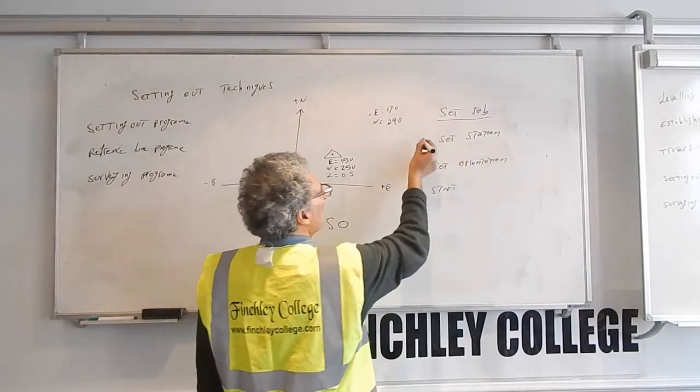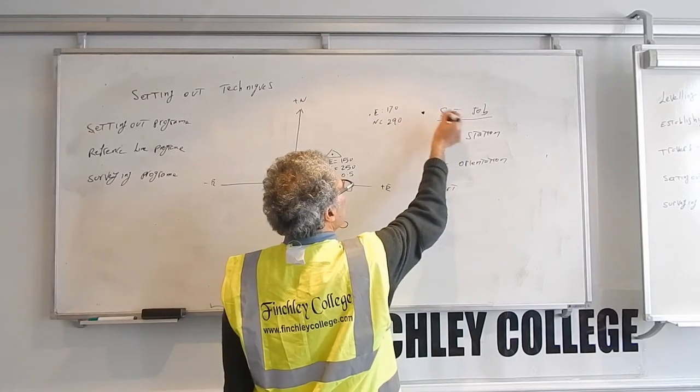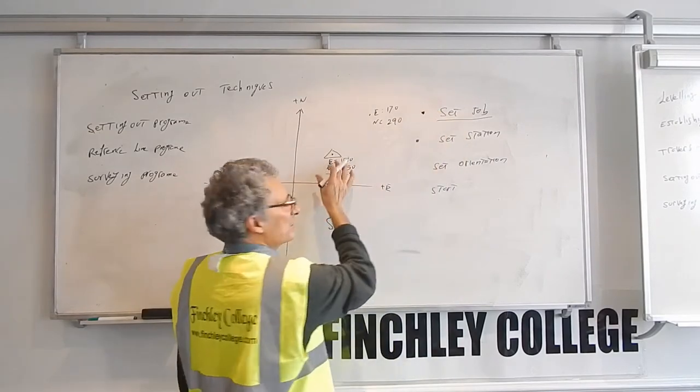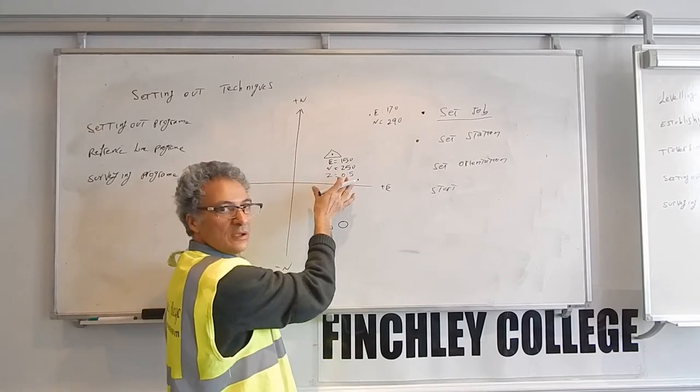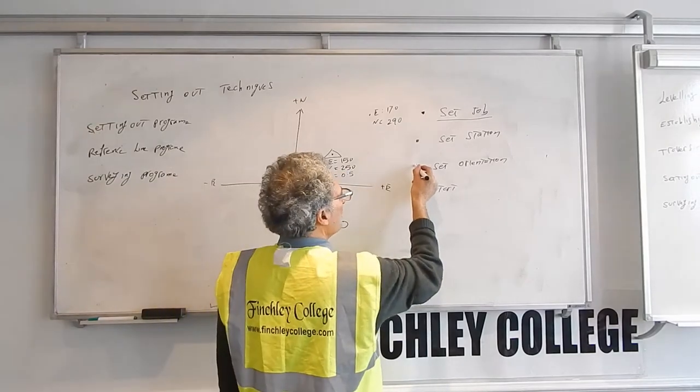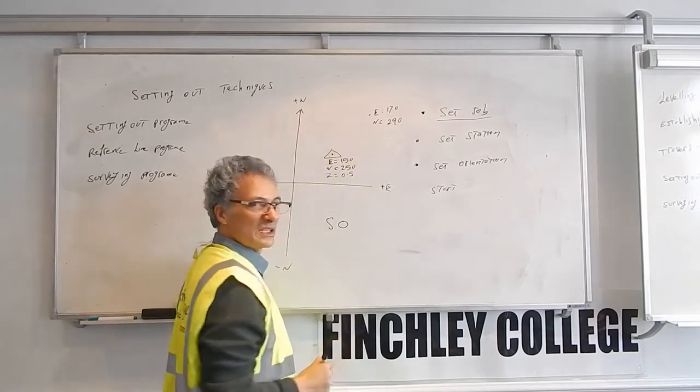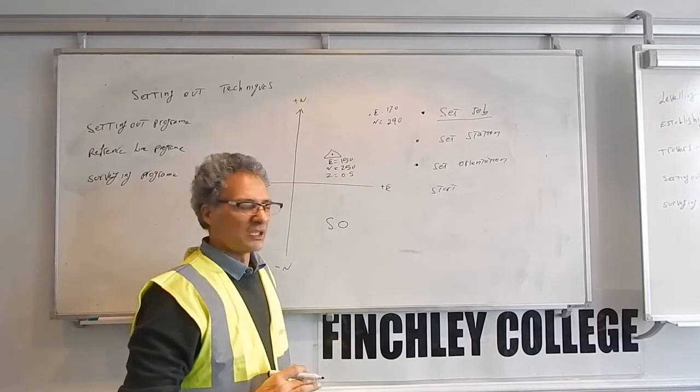Set station is done, there will be a tick in there, a dot in there, done. Set station is done because you've done a free station and the instrument knows the station. Set orientation is already done because the free station automatically calculates the correct bearing for the instrument.